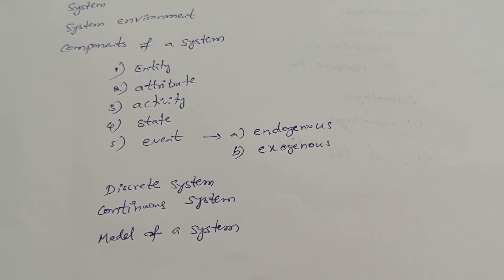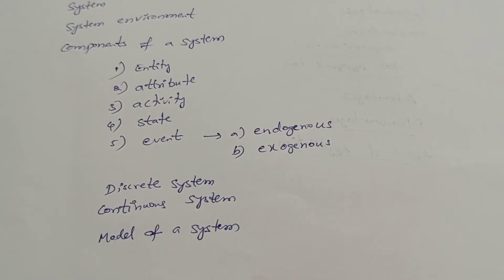For example, when you take a bank, it is a discrete system. Why? Because from 10 to 5, the whole time the bank will not be busy.